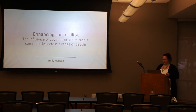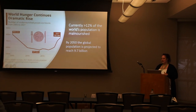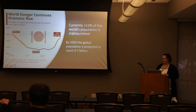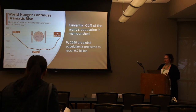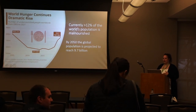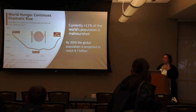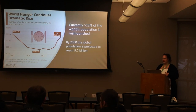The global population is projected to reach 9.7 billion people by 2050, and with this we're going to see food demand increasing by 50%. With already more than 12% of the world's population malnourished and our agricultural systems continuing to be strained by the effects of climate change and decreases in soil fertility, we need to adapt our agricultural practices to increase yields while also feeding this growing population.